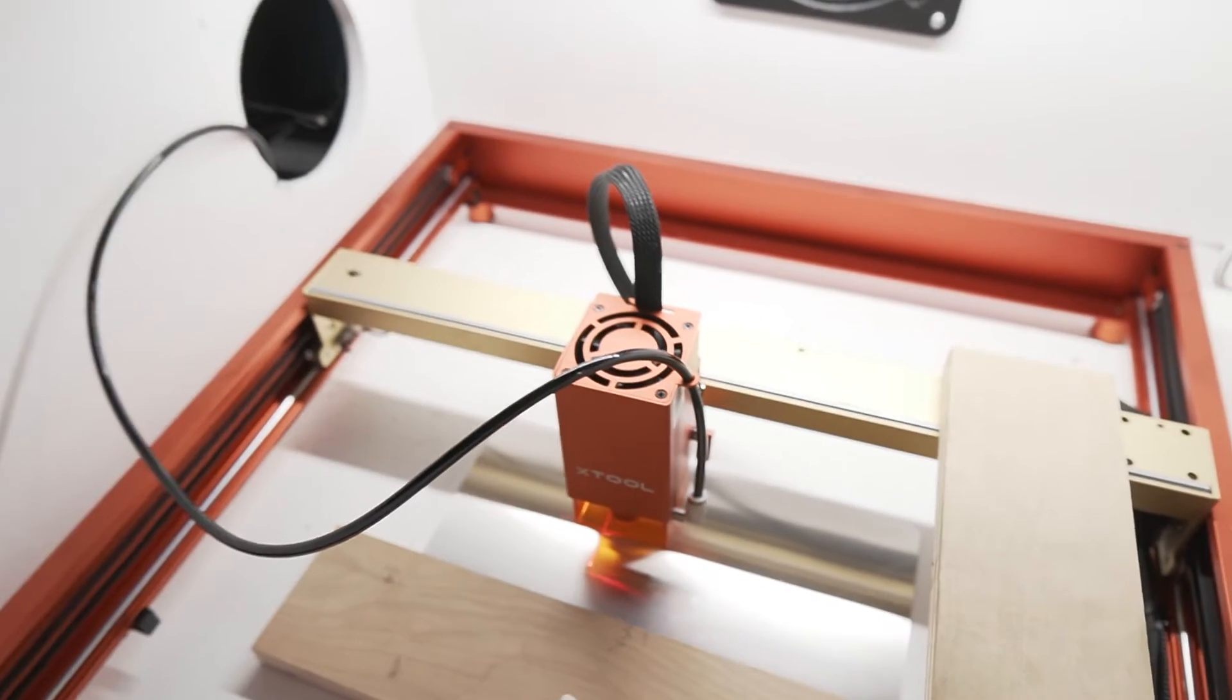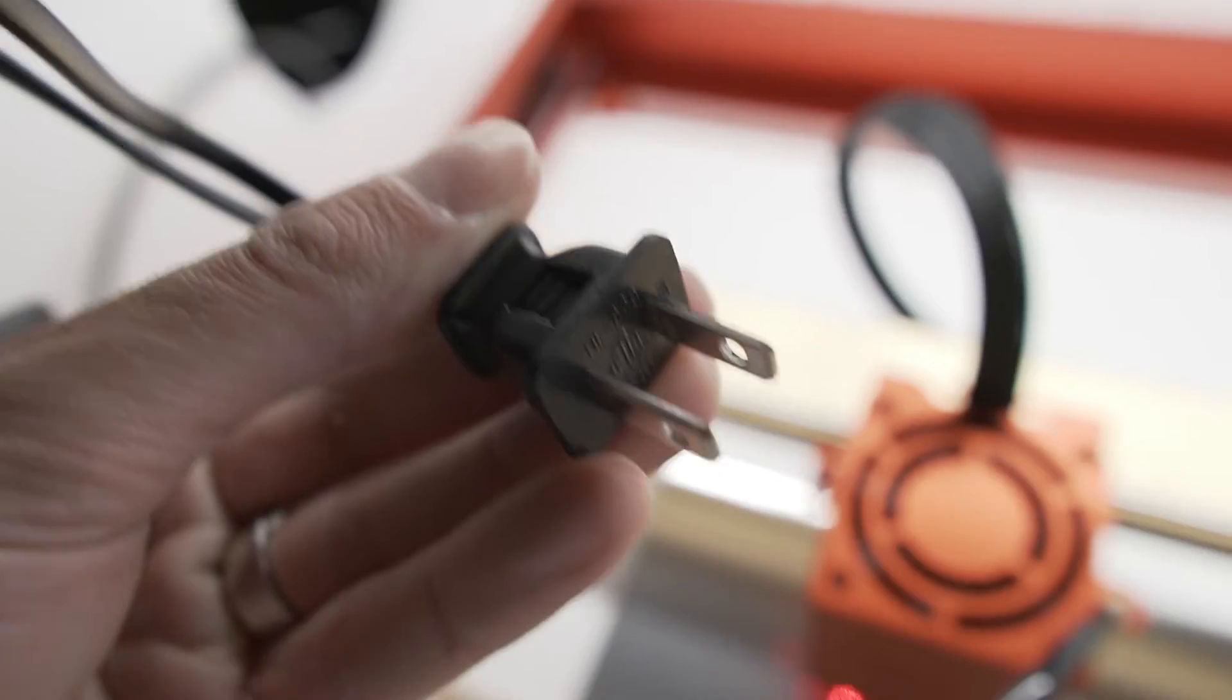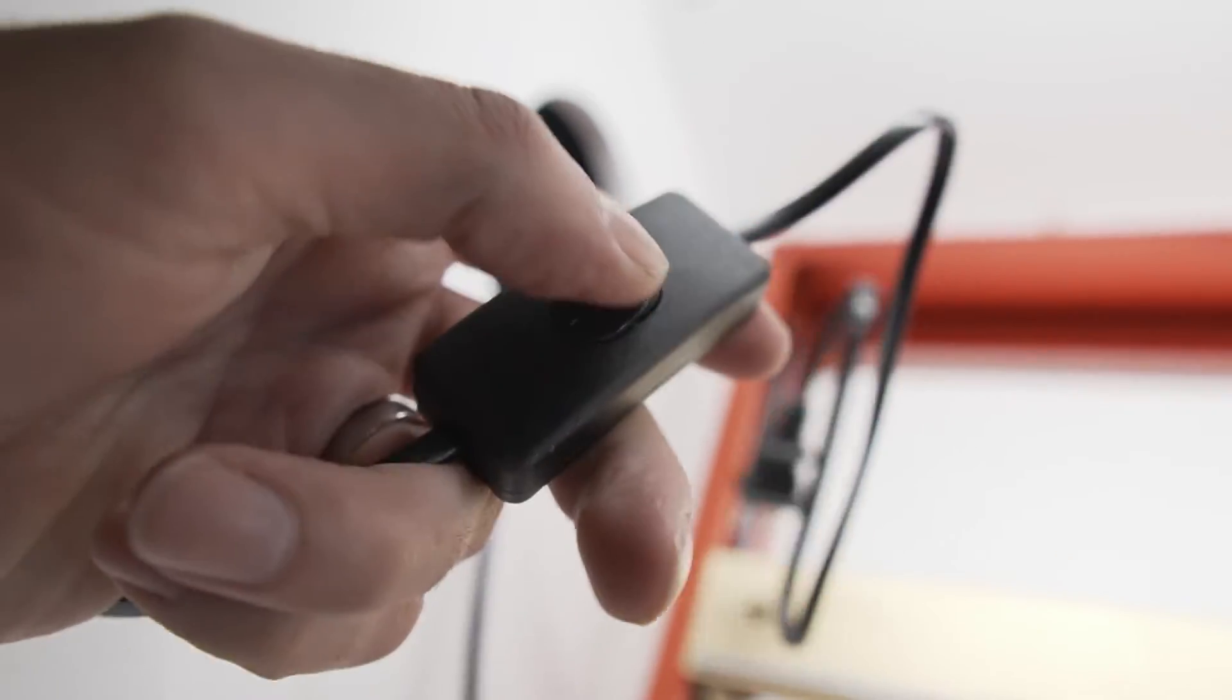So that's pretty much it for installing the Air Assist. I've got the pump sitting outside of my enclosure here. All I need to do is plug it in and there's an inline switch to turn it on and off.